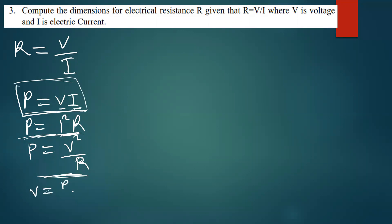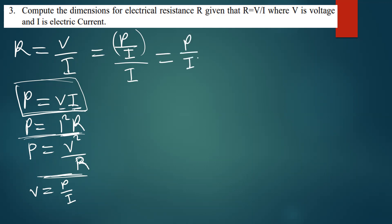V will then be equal to P over I. So where there is V, I'm going to replace with P over I, giving us P over I, all divided by I. This gives us P over I squared. Alternatively, you can just take the formula P = I²R and make R the subject, giving R = P over I squared.